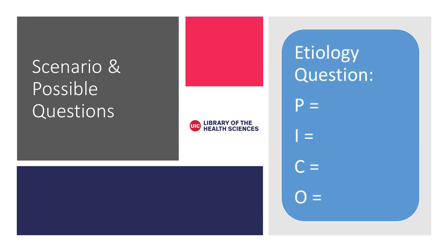Now let's try an example where we look at the PICO elements first and use them to write a natural language question. We want to know more about how our patient's estrogen therapy relates to pulmonary embolism risk. This is an etiology question. So let's think about the elements and fill them in with relevant information. What aspect of our patient is important for this question? In our other examples, we were looking at aspects related to their hypertension. However, maybe in this case we don't want to focus on patients with known hypertension. Maybe we want to look more generally at the demographics of this patient.